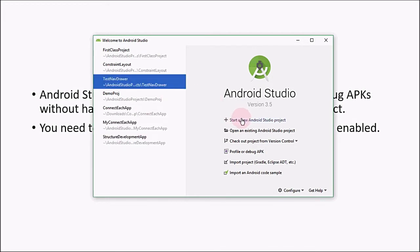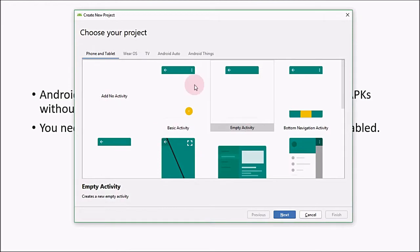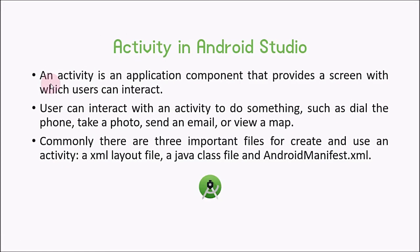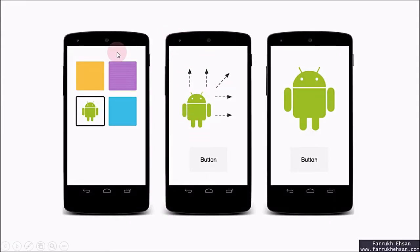Now I'm going to create a sample project to show you the different options that come with Android Studio. Click on 'New Project' and you will see a screen with different types of activities you can use to develop your Android application. An activity is an application component that provides a screen with which the user can interact. The screen that comes on your mobile phone when you click an app icon is an activity. When you create an activity, it uses three different files: an XML layout file for the front end, a Java class file for the backend, and an Android Manifest file to keep a record of all activities in the application.